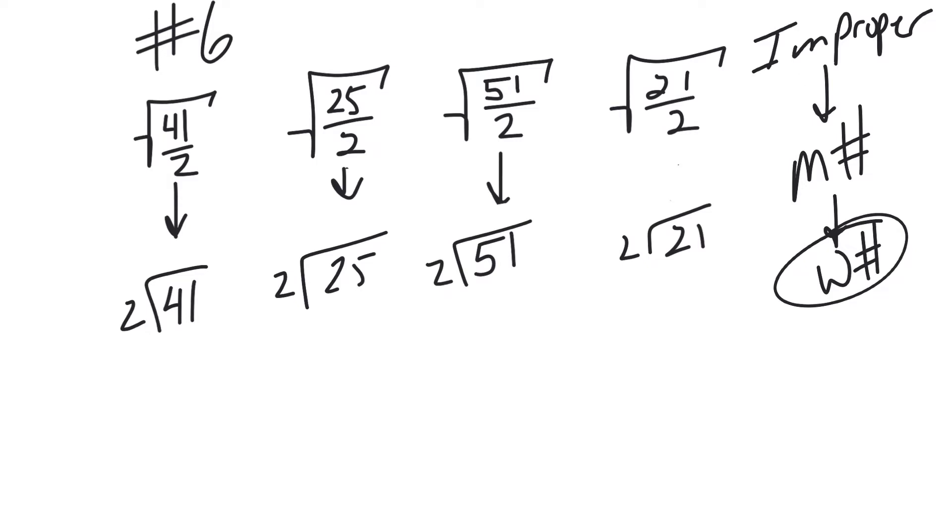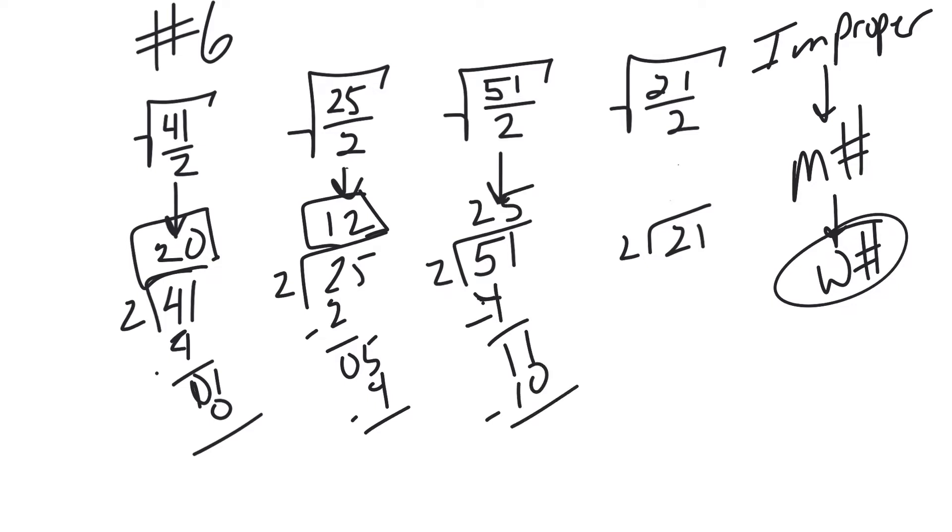So if I divide two into 41, that's going to go 20 times. Then we've got two into 25, that's going to go 12 times. Then we've got two into 51, that's going to go 25 times. And then we got two into 21, that's going to go 10 times.